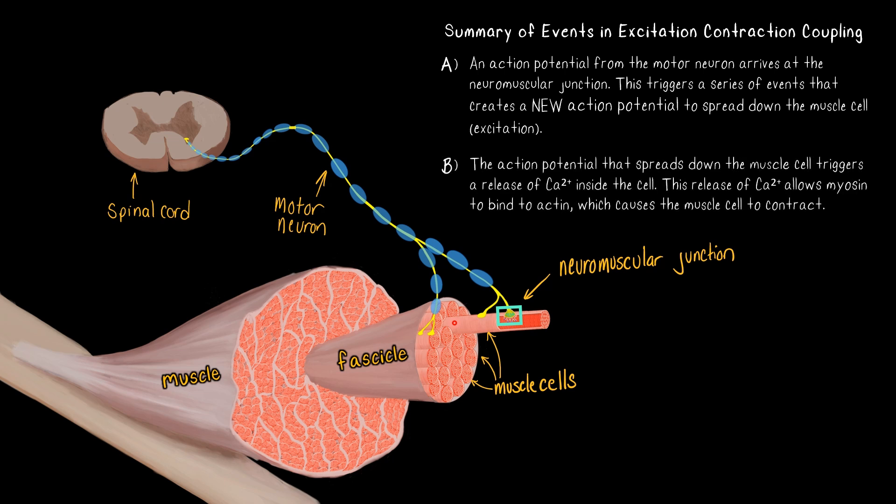And once the muscle is excited, that action potential spreading down the muscle cell is going to trigger a release of calcium to the inside of the muscle cell, and that release of calcium is going to allow myosin to bind to actin, which will cause the muscle cell to contract.